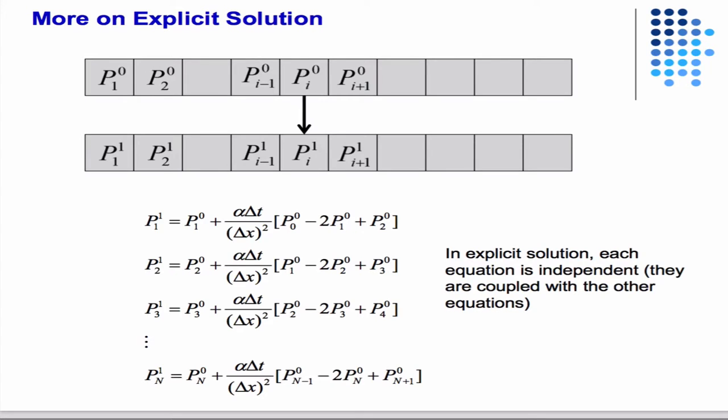You see that they're uncoupled in the sense that these are all known values. For the first time step, they use all old values, so they're all known.